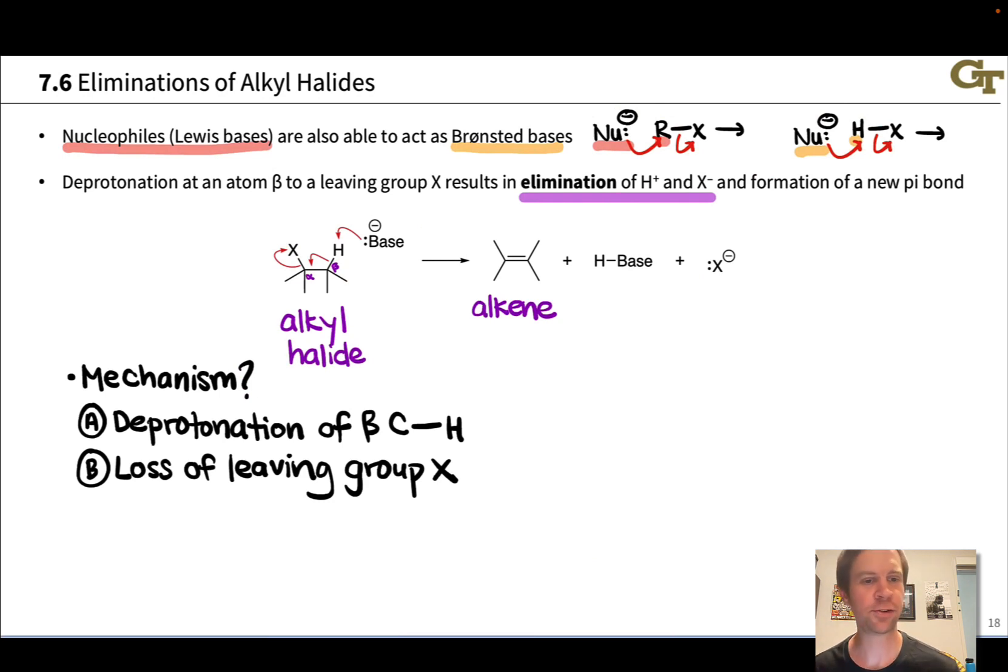In terms of the questions we're interested in here, we're naturally interested in how the mechanism takes place. These curved arrows give one hypothesis, and the thing to notice is there are two things happening at once. There's a leaving group that's departing, and there's a proton that's being removed. We can imagine part A is deprotonation of a beta CH, and part B is loss of the leaving group X. There are different orders in which these steps can occur. They could occur at the same time, as suggested by this electron flow, or deprotonation could occur first, or loss of the leaving group could occur first. This gives rise to three distinct classes of elimination mechanisms that we'll touch on in this unit.